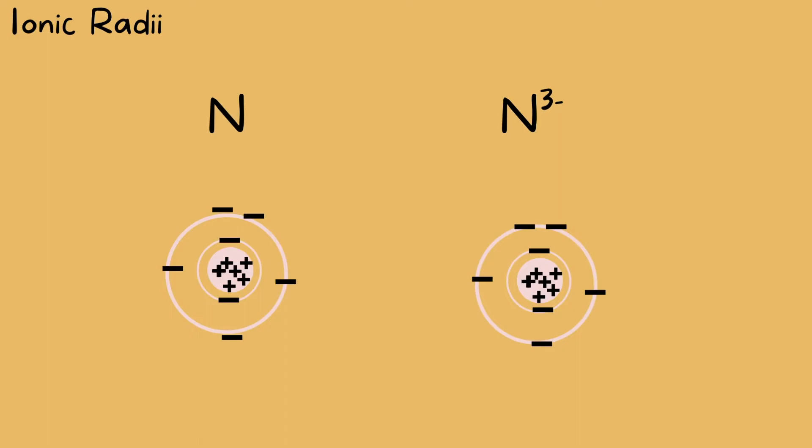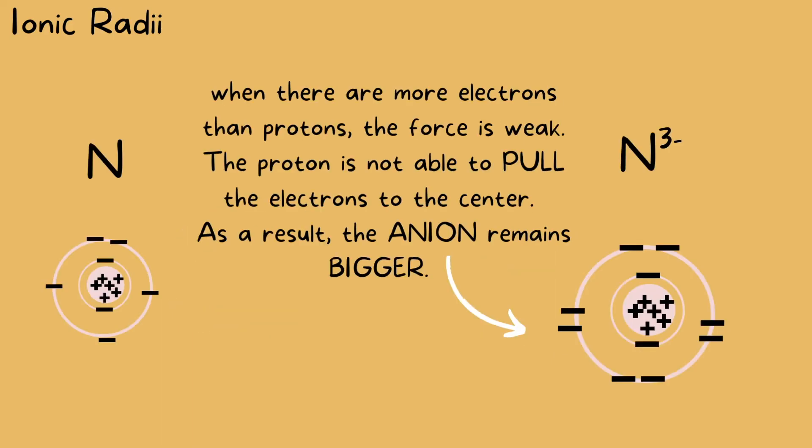There will always be more electrons than protons in anions. So the protons don't have the upper hand here. They do not have enough energy to pull these electrons inwards significantly. As a result, the anion stays larger in size simply because it has more electrons taking up space.